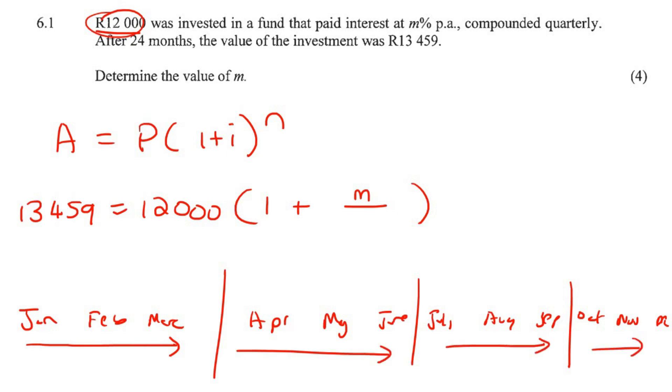But how many times, how many quarters are there in a year? There are 1, 2, 3, 4 quarters. That is the number you put at the bottom there. It's how many times does it happen per year. So it would happen once there, then there, then there, and then it would happen again at the end of December. So there are four compounding periods happening per year.